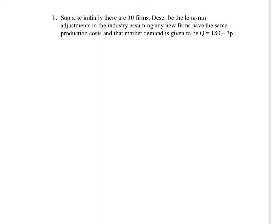Now suppose there are 30 firms. Describe the long-run adjustment, assuming any new firm has the same production costs. We know that the long-run number of firms is the point at which profits are eliminated. From the previous question, when price is $9, there are zero profits. So $9 is the long-run price — the price at which the firm makes no profits.